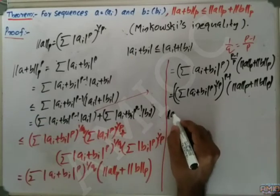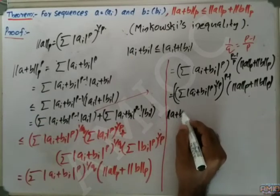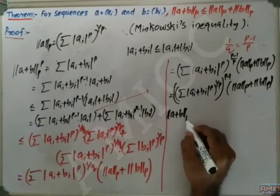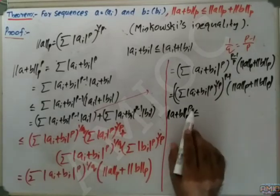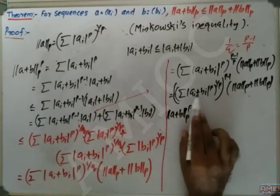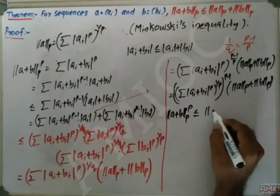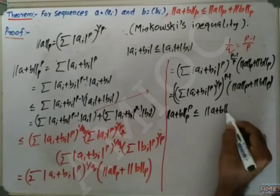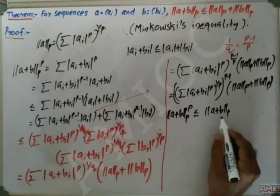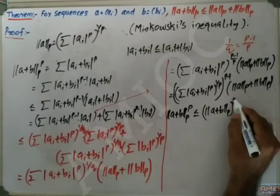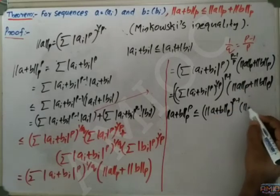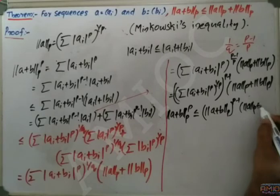So what we have obtained is: ‖a+b‖_p^p ≤ ‖a+b‖_p^(p−1) · (‖a‖_p + ‖b‖_p).